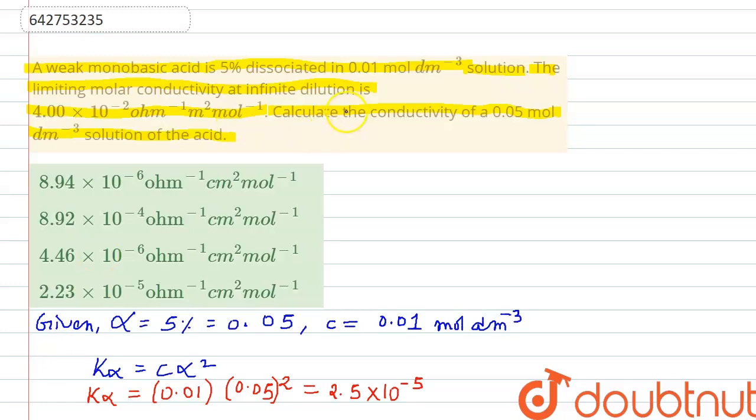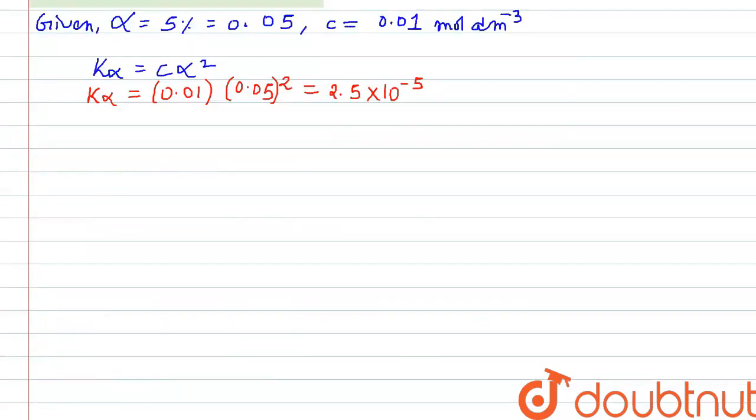Now in the next statement, when we are using 0.05 mole per decimeter cubed solution, then obviously our dissociation constant is going to be the same. Only the value of alpha will change for that solution.